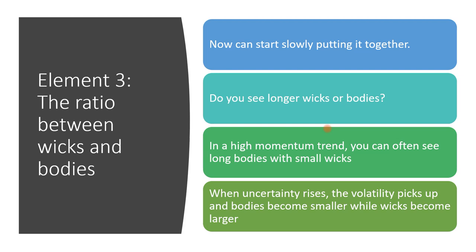Now let's put it together. Do you see longer wicks or bodies? In a high momentum trend you can often see long bodies with small wicks. When the market is being pushed up by buyers, it's most likely going to close towards the highest point it reached — not at the highest point, as the bulls pushed up a little higher but couldn't hold firm momentum. Imagine a tug of war: at exactly 1:15 when they yell lunchtime, that's the close of the candle — wherever they happened to be at that moment. The open is where they started out in the morning.